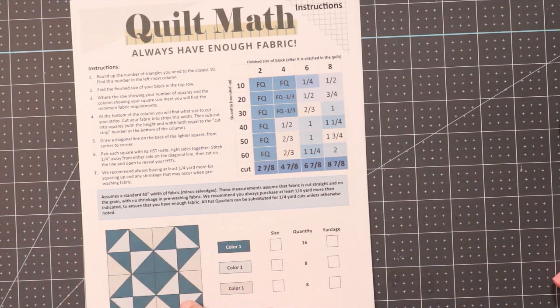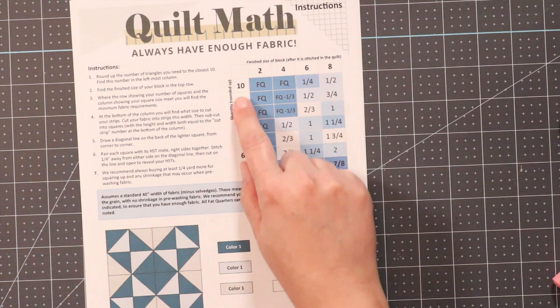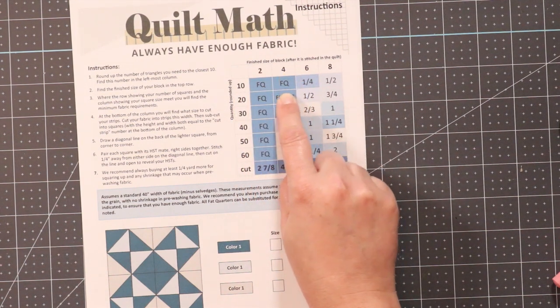For the next color, I need 8, and I'll round that up to 10, and I'll just need a fat quarter.